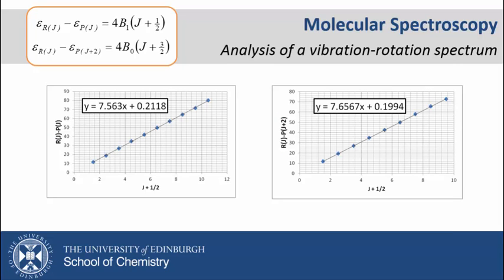Here are our two plots using these equations. The slopes are equal to 4B, so we can say that B₁=1.891 wavenumbers and B₀=1.914 wavenumbers.